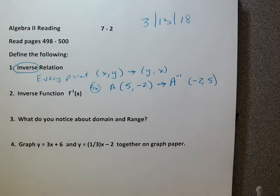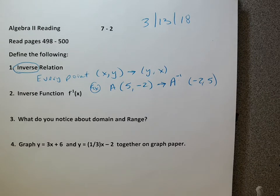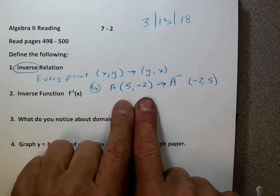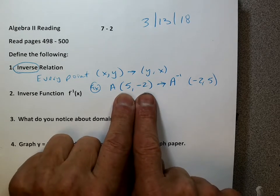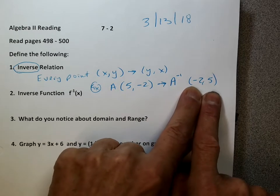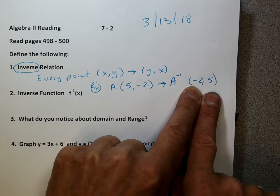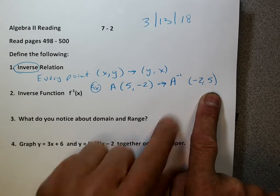That's all you do. To do an inverse on graphing — this is the opposite of graphing — how do you do the opposite of graphing? You just switch the x and y's. That's all. It went from (5, negative 2) and the inverse point becomes (negative 2, 5). That's pretty easy — just switch them around.